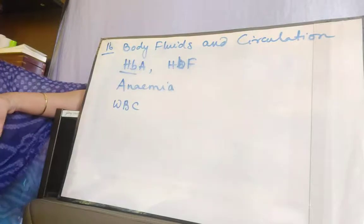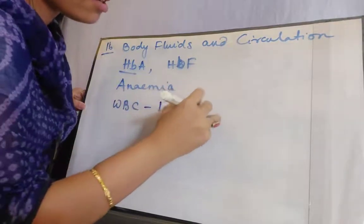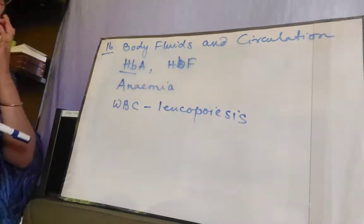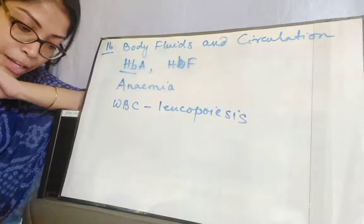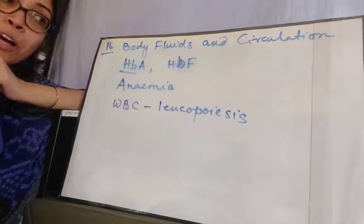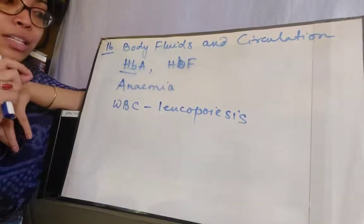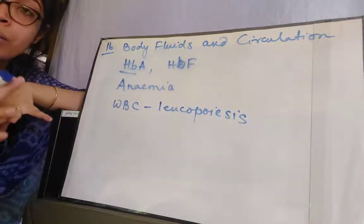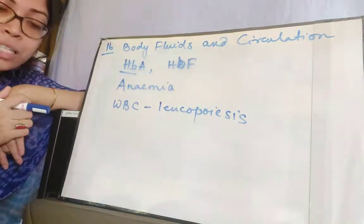Just as RBC formation is called erythropoiesis, WBC formation is called leukopoiesis — the process of formation of WBCs. The lifespan of WBCs is shorter than that of RBCs; WBCs survive in blood for only a few hours to 15 days. RBCs have a lifespan of 120 days. Since there are different types of WBCs, each with different lifespans, you give a range of a few hours to 15 days.